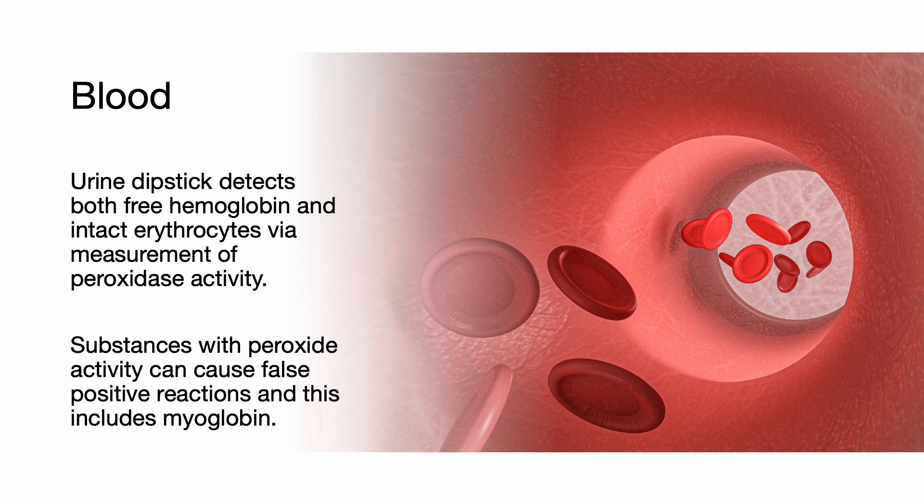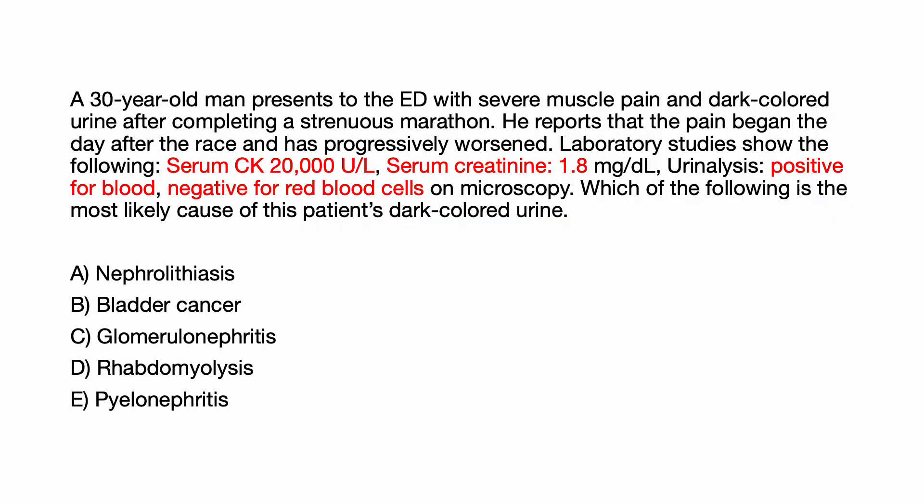Urine dipstick detects both free hemoglobin and intact erythrocytes via measurement of peroxidase activity. Substances with peroxidase activity can cause false positive reactions, and this includes myoglobin. Here's a 30-year-old man who presents to the ED with severe muscle pain and dark-colored urine after completing a marathon. He reports that the pain began the day after the race and has progressively worsened. Lab studies show an elevated serum CK of 20,000 and elevated serum creatinine of 1.8. Urinalysis showed positive for blood but negative for red blood cells on microscopy. Which of the following is the most likely cause of this patient's dark-colored urine: nephrolithiasis, bladder cancer, glomerulonephritis, rhabdomyolysis, or pyelonephritis?